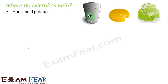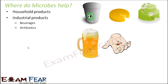Where do microbes help? There are many different areas where they are helpful. For example, in household products — microbes help in preparing many household products like curd, cheese, and bakery items like bread and cake. Industrial products like alcoholic drinks and beverages, whether beer, wine, or others, also rely on microbes.